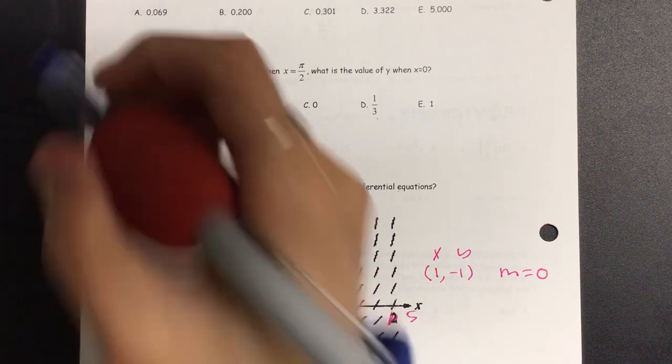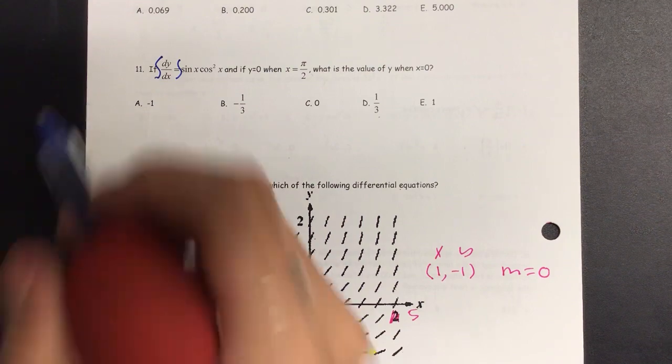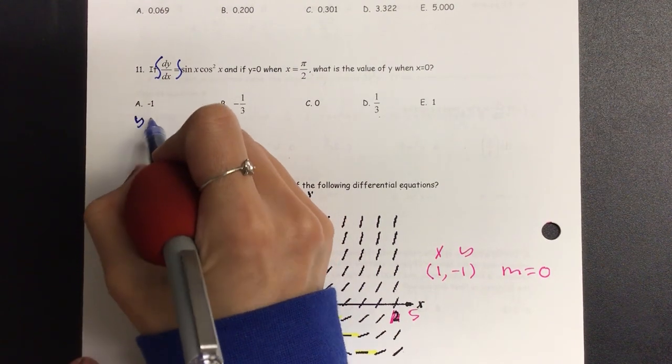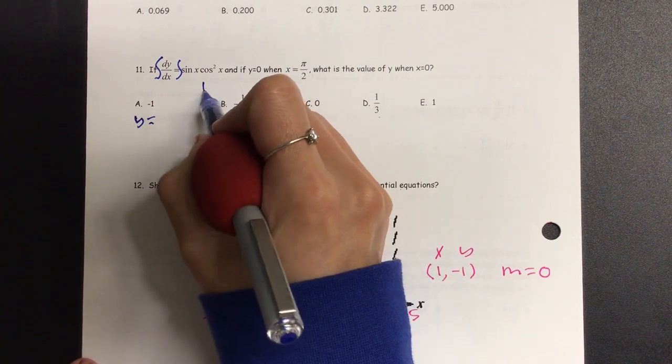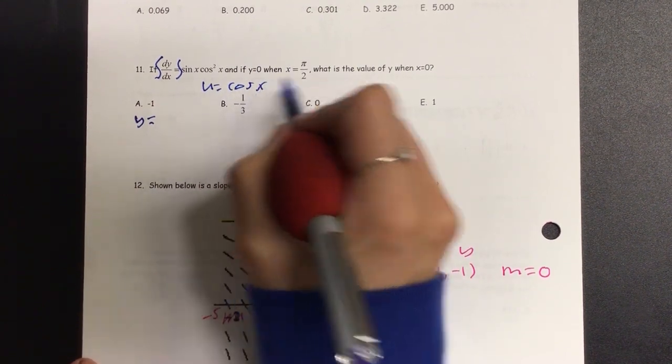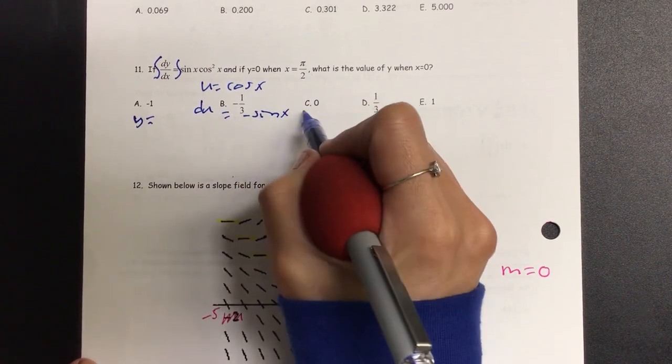Okay, so we're going to integrate on both sides, and when I do, we get y by itself. y is equal to, and I'm going to let u equal the bigger power one, so we have u is equal to cosine of x, so du is equal to negative sine x dx.